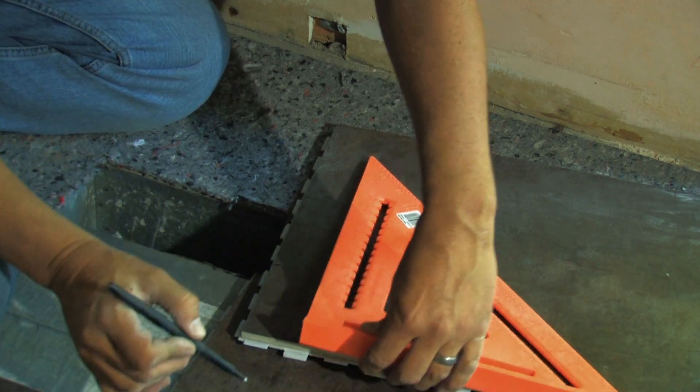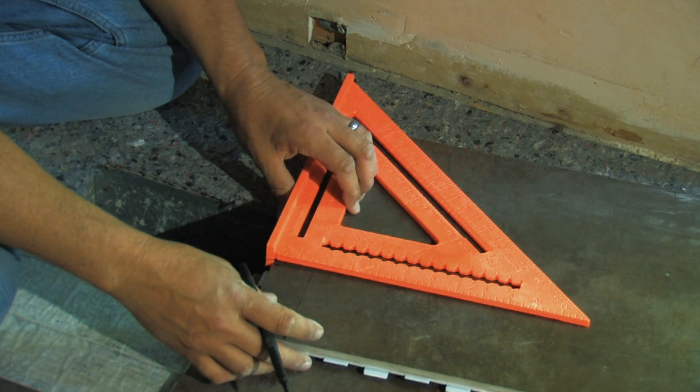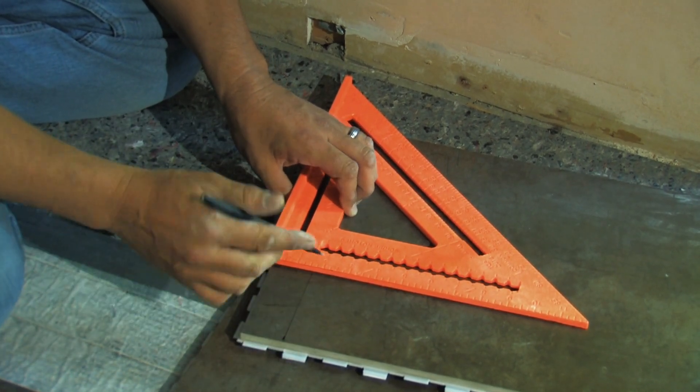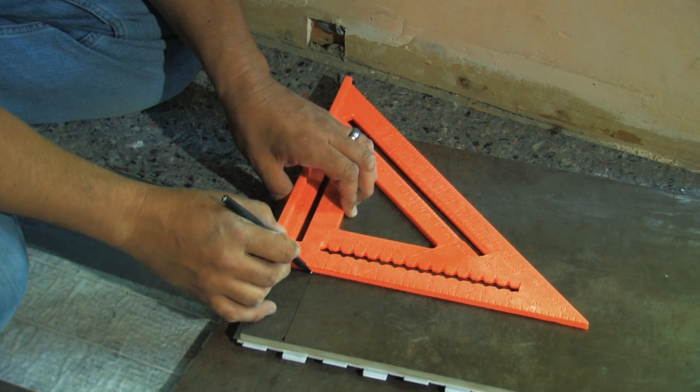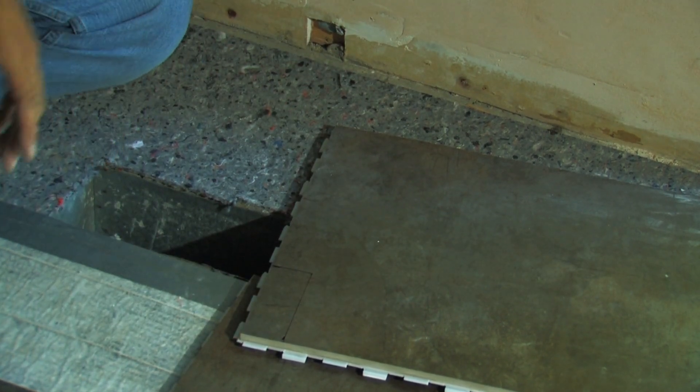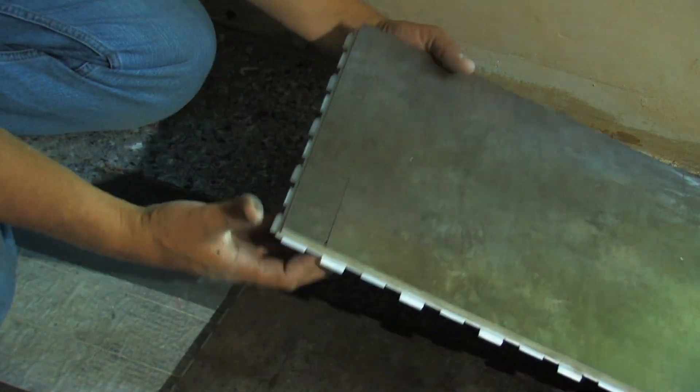Now because this is a two-angle cut, we're unable to use the tile breaker to get this cut, so we'll have to use either the angle grinder or the wet saw. We can use either. We'll use the wet saw for this cut. Let's go make that cut now!